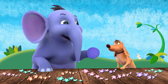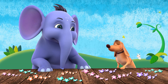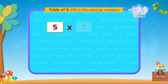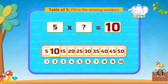Let's fill in the missing numbers. Five multiplied by a number is 10 — what is the missing number? To get 10, we have to skip count five twice, so the missing number is two. Keep on trying!